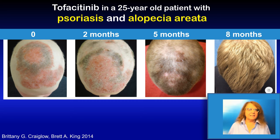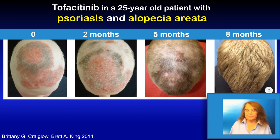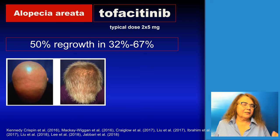This is an example — tofacitinib, a JAK1 and JAK3 inhibitor, in a patient who was receiving this drug in a psoriasis clinical trial. This patient had psoriasis and alopecia areata. And to the surprise of the investigators, not only did psoriasis improve, but he also had a full regrowth of hair. This was the beginning of many dermatologists and investigators becoming interested in JAK inhibitors and alopecia areata.